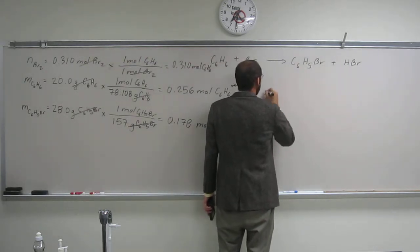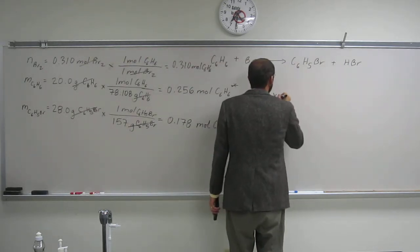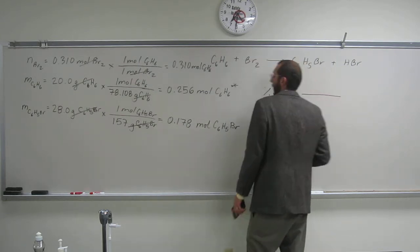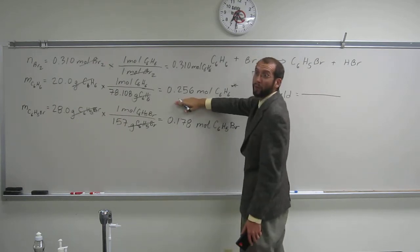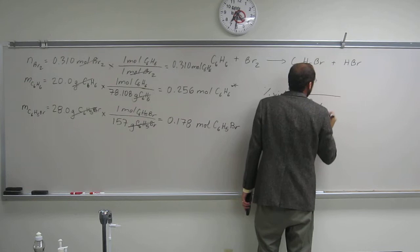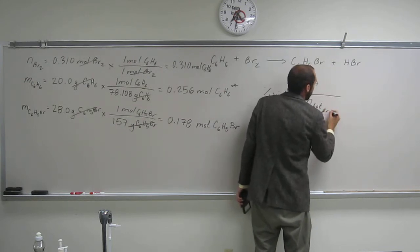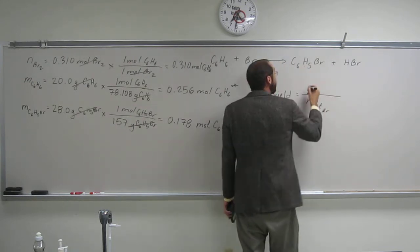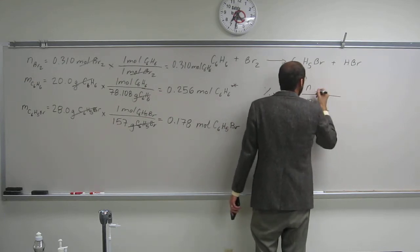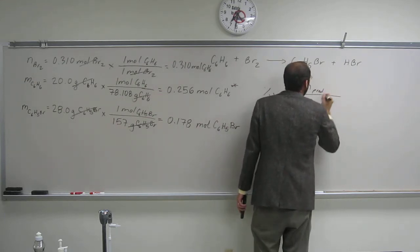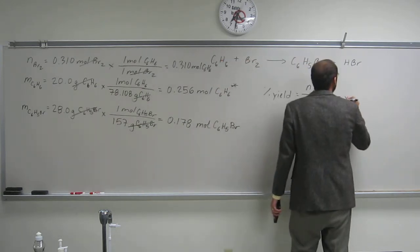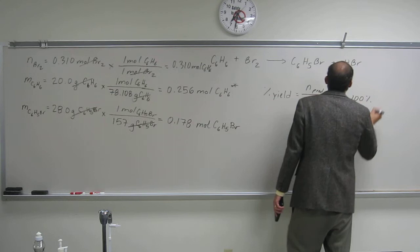So the percent yield is going to be the total number of moles that you could have had. So if you want to write it out, total, and this would be of the limiting reagent, and the top would be the number of moles of product, and in this case, the product is your bromobenzene, you're going to multiply that by 100%.